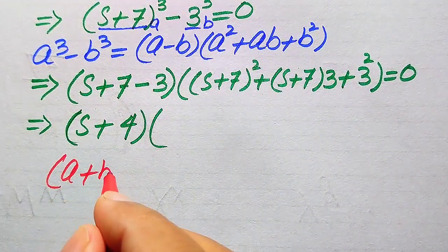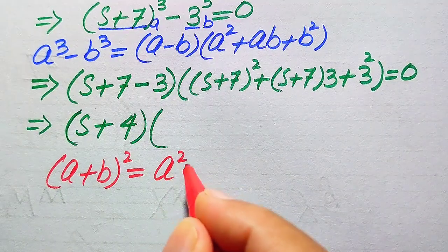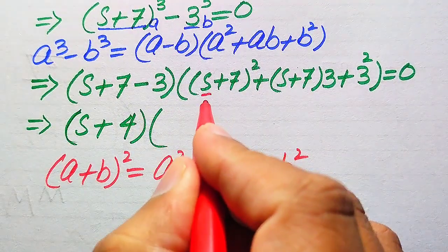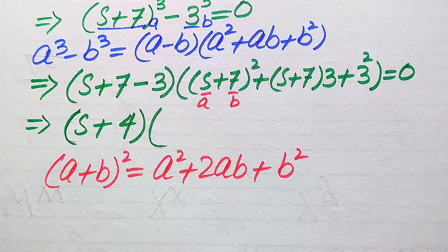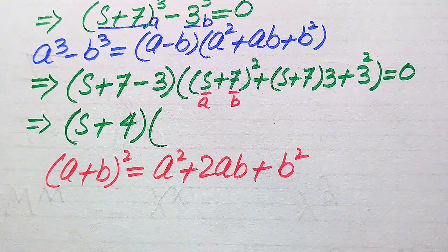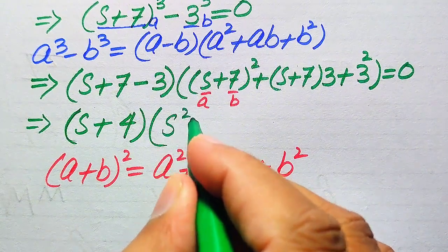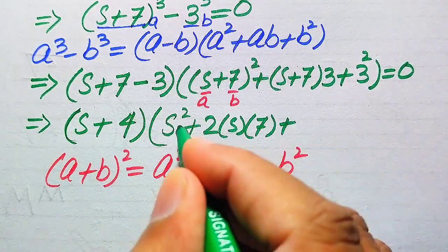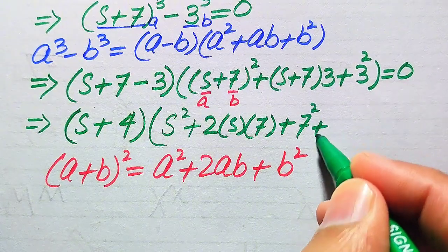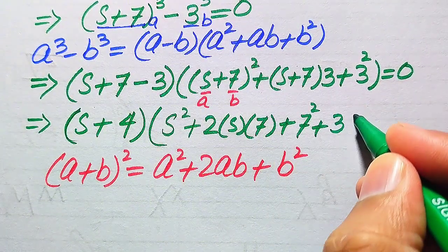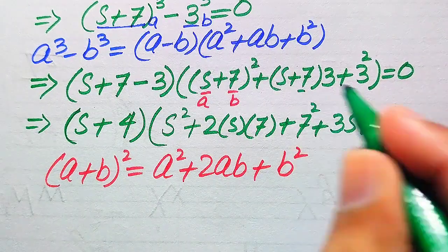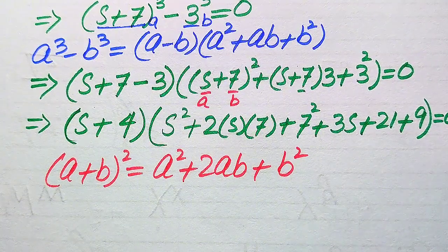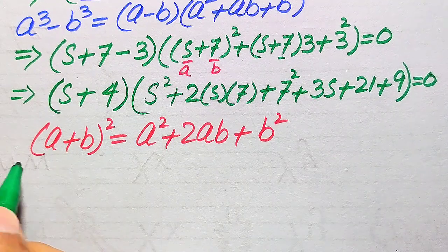The square identity states: (a + b)² = a² + 2ab + b². Here a = s and b = 7, so (s + 7)² expands to s² + 2(s)(7) + 7² = s² + 14s + 49. Then multiplying 3 through gives 3s + 21, and 3² = 9. The equation becomes (s + 4)(s² + 14s + 49 + 3s + 21 + 9) = 0.